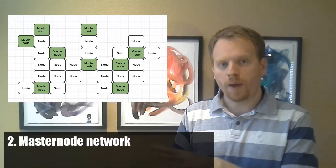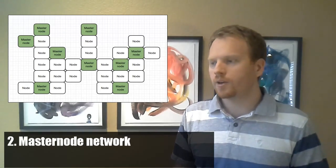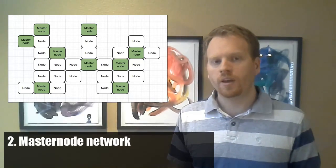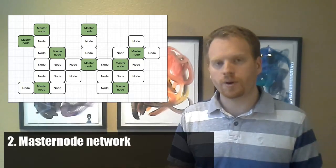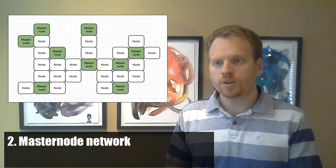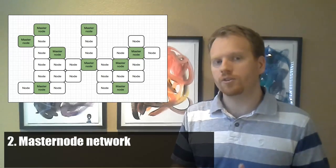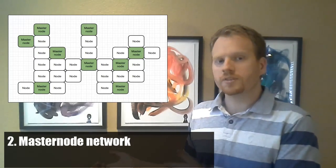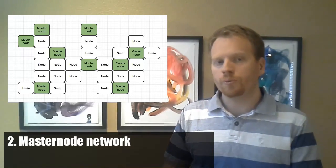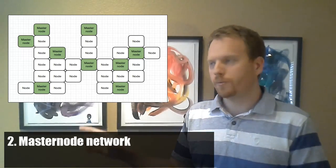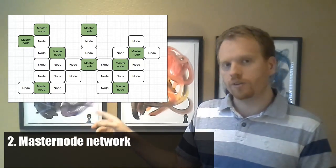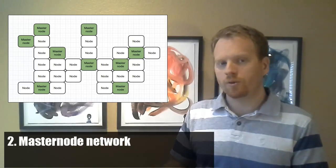The next slide is the master node network. You have master nodes mixed in with the regular network, connected and propagating messages around. You have a list of them in the client and your client can use them at any time. Here's what it looks like when a user goes through multiple sessions: it hit up the first master node for session one, then went through sessions two and three, and then later after the coins were completely anonymous, it made an anonymous transaction.